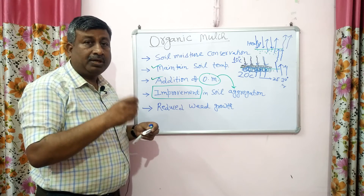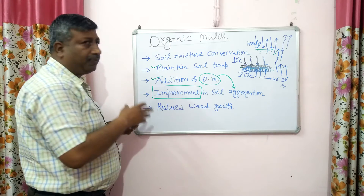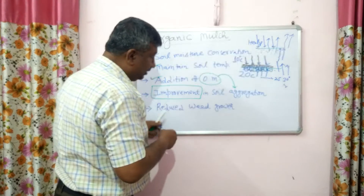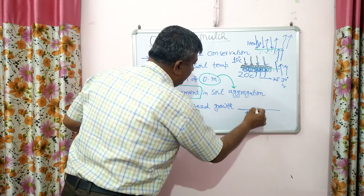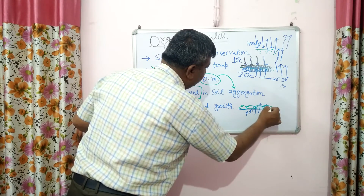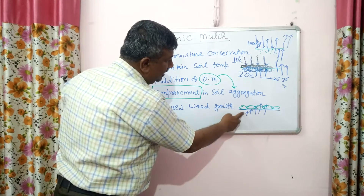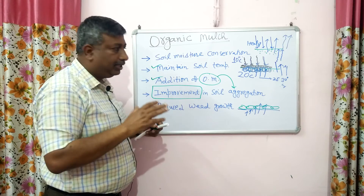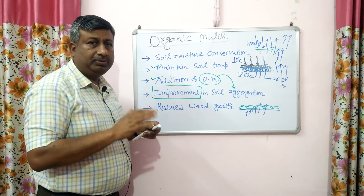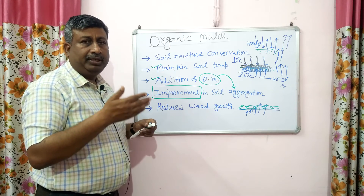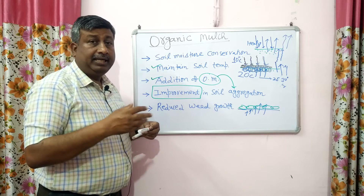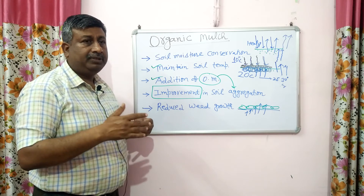Another advantage of organic mulch is reduced weed growth. When we apply organic mulch on the soil surface, it acts as a physical barrier. Emerging weeds that would normally come through the soil surface are hindered by the organic residue, which provides a physical barrier so emergence is not as easy as in bare soil. Weed growth is thus reduced. Mulch can be used for soil moisture conservation in summer season, and in rainy season when weed growth is high, mulch can be used to reduce weed growth. The objective depends upon the situation.